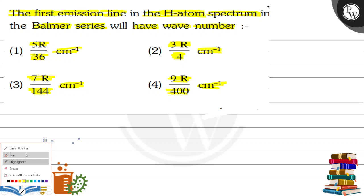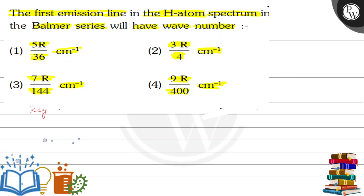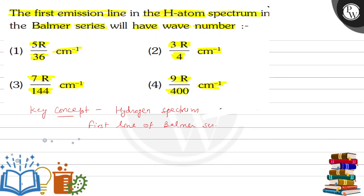Key concept: this is the hydrogen spectrum. The first emission line means the first line of the Balmer series. For the first line of the Balmer series, n2 equals 3 and n1 equals 2.